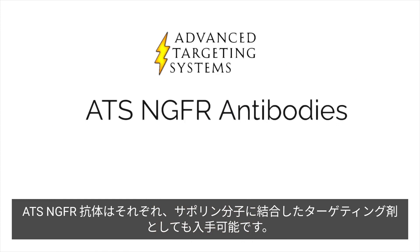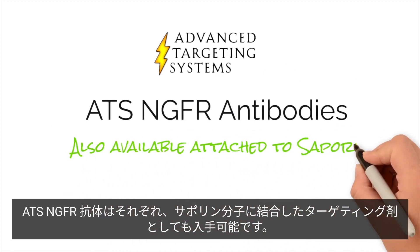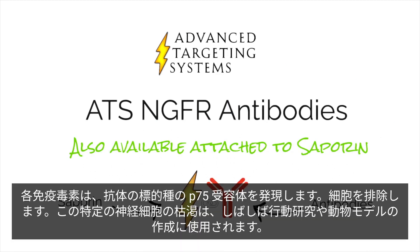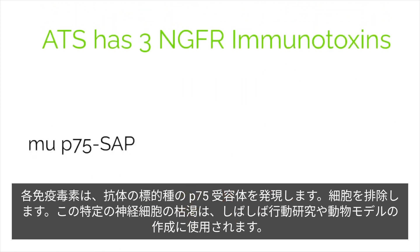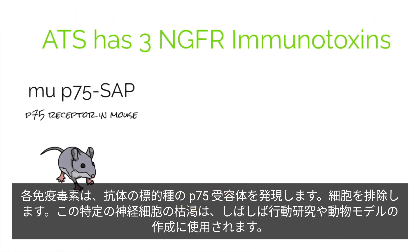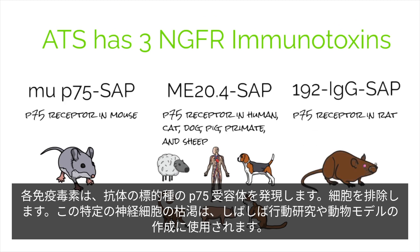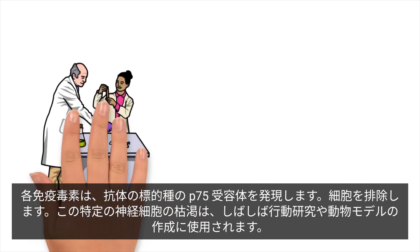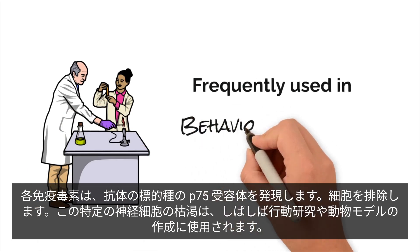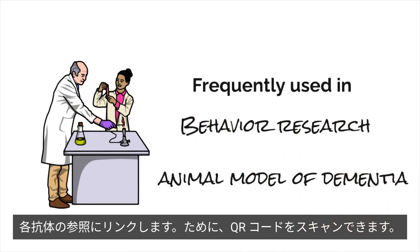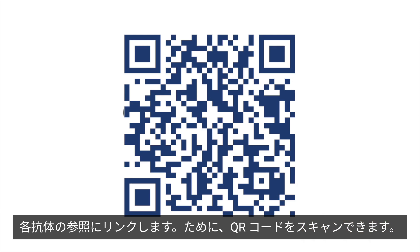Each of the NGFR antibodies is also available as a targeting agent attached to saporin. Each immunotoxin will eliminate cells that express the P75 receptor. This specific neuronal depletion is frequently used in behavioral research and in animal models of dementia. You can scan the QR code that will link you to the scientific references for each antibody.